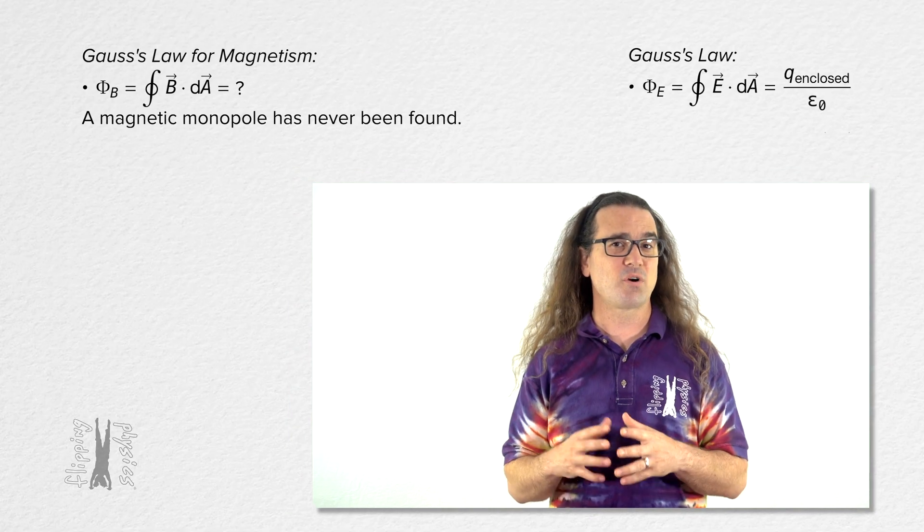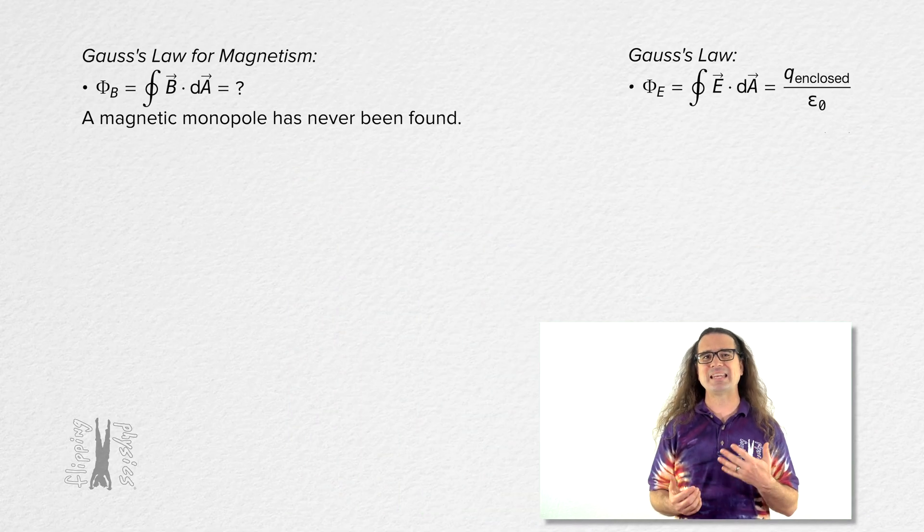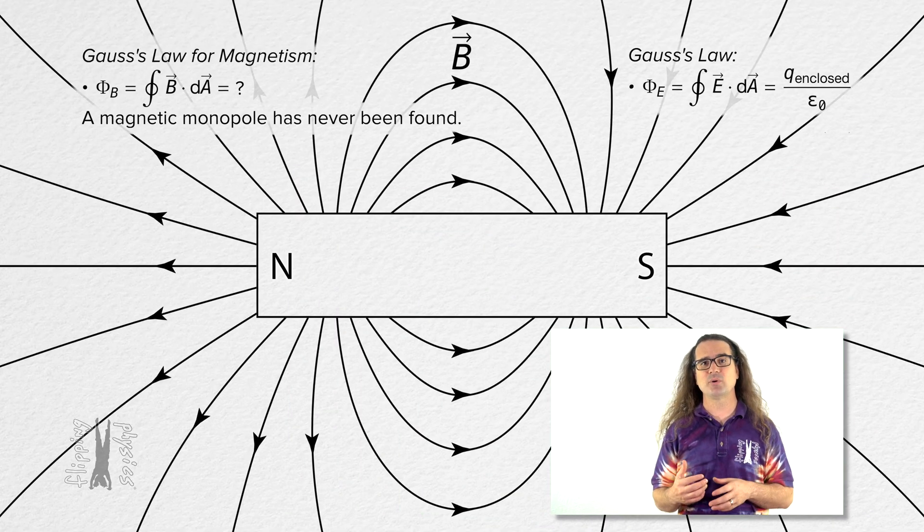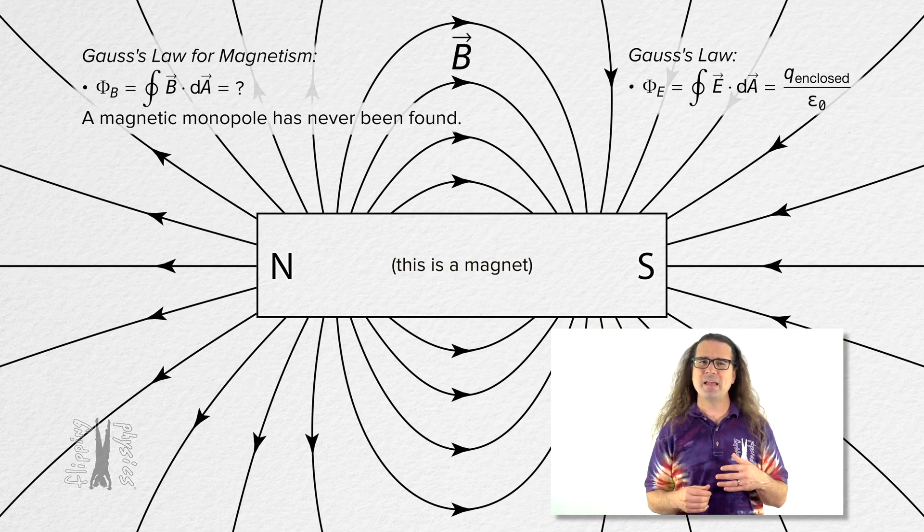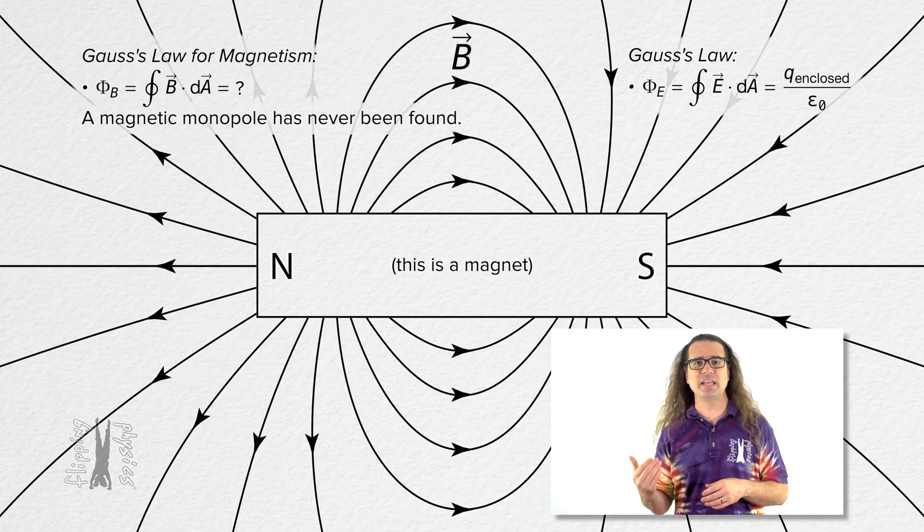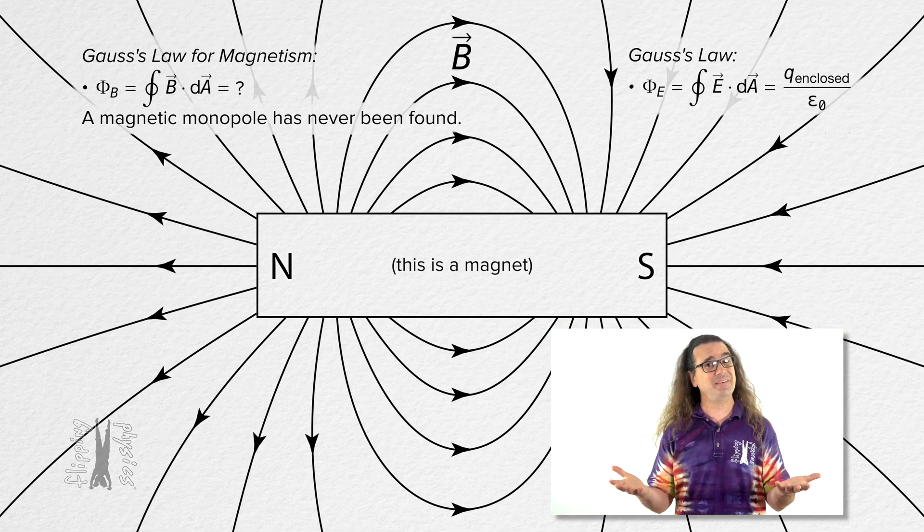To recall what that means for magnetic fields, let's put an illustration of a magnetic field which surrounds a dipole magnet. Bo, remind me what the fact that magnetic monopoles have never been found in nature means for magnetic fields.